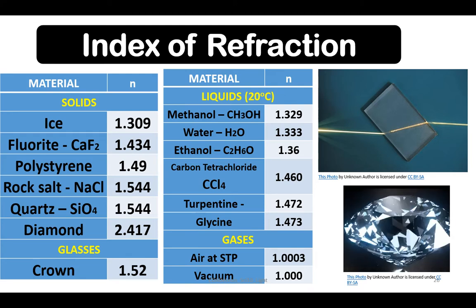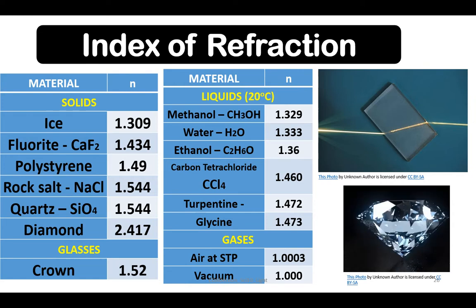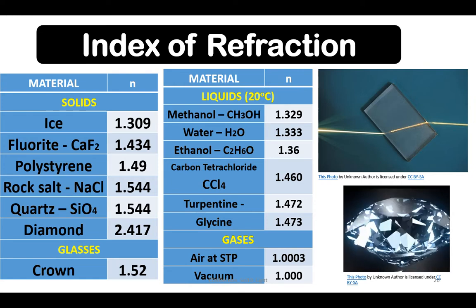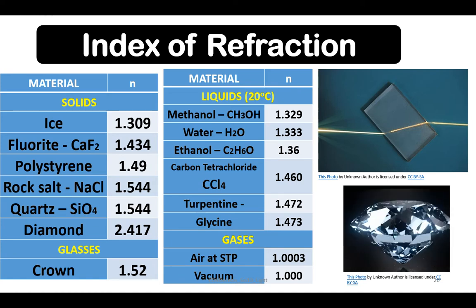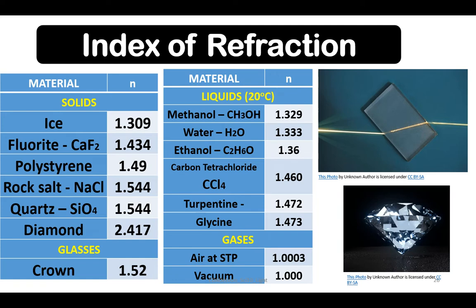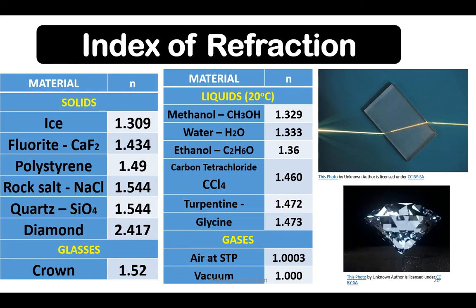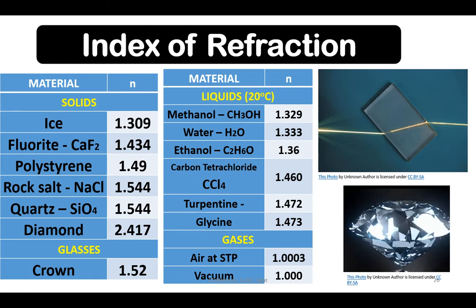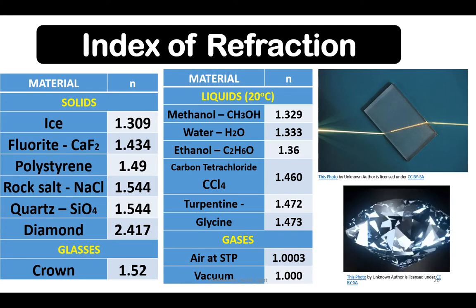In terms of gases, we have air at STP. STP in chemistry is the abbreviation for standard temperature and pressure. The standard temperature is 273 Kelvin or 0 degrees Celsius or 32 degrees Fahrenheit. At ang standard pressure naman ay 1 atmospheric pressure. And we have vacuum, which has an Index of Refraction of 1.